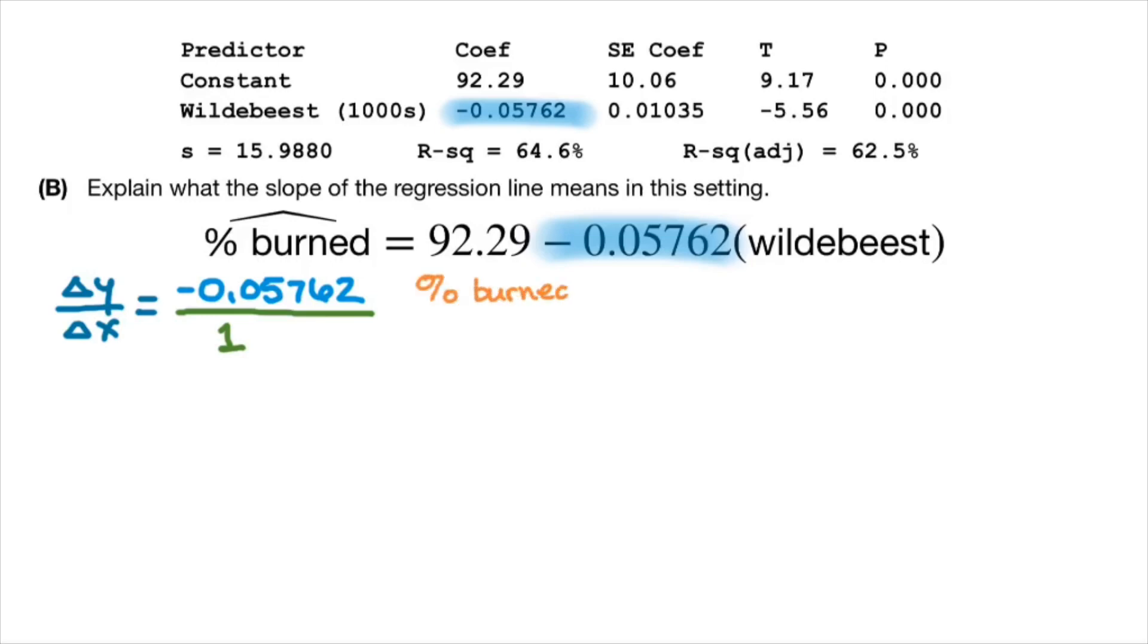What always helps me answer this question is to write down beside my slope, my variables in context. So since it's the change in y over the change in x, what is our y variable? Well, it's the percent of grass burned. So it's percent of grass burned over my x variable, which is the number of Wildebeest. I can use this picture to help me write my slope sentence.